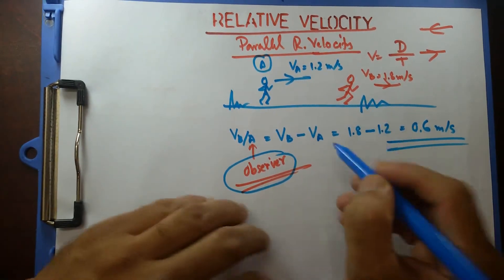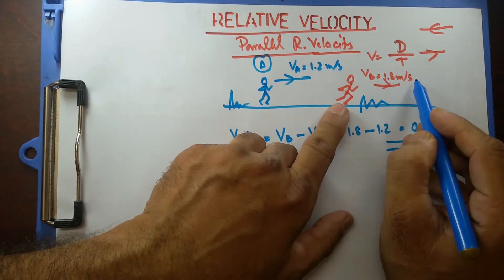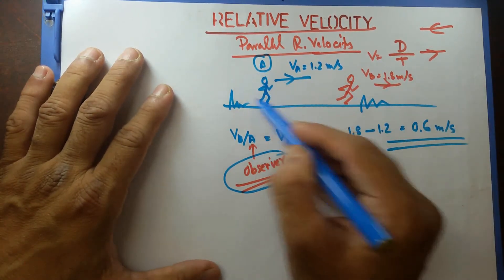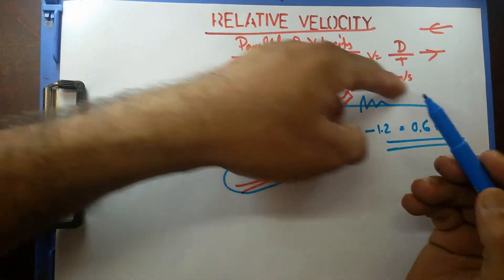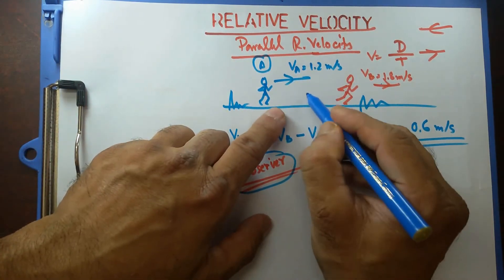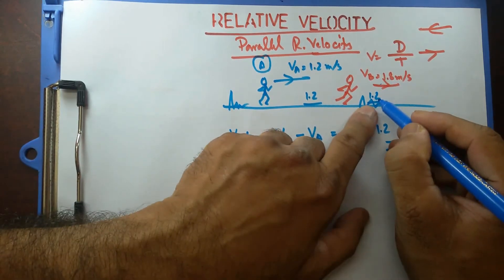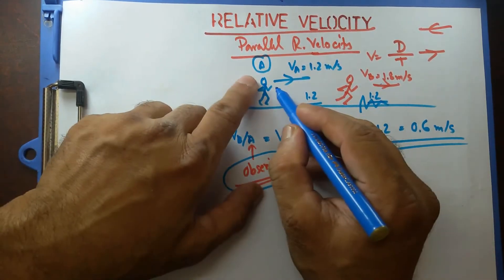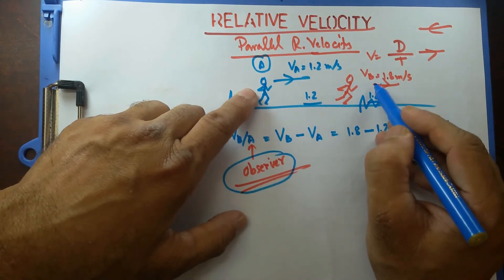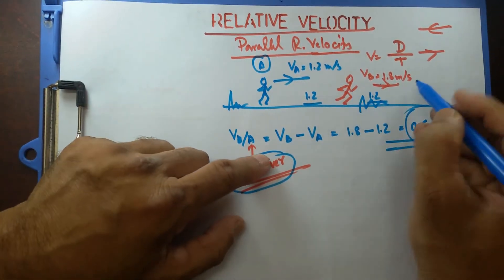What does that actually mean? If I'm standing at station A and not moving at all, B is moving at 1.8 meters per second. But since A is also moving at 1.2 meters per second in the same direction, we subtract that velocity. B is moving only 0.6 meters per second more than A — so to A, B appears to move at 0.6 meters per second in that direction.